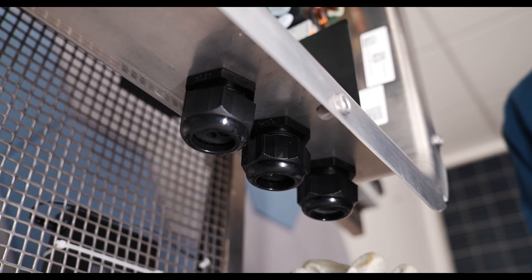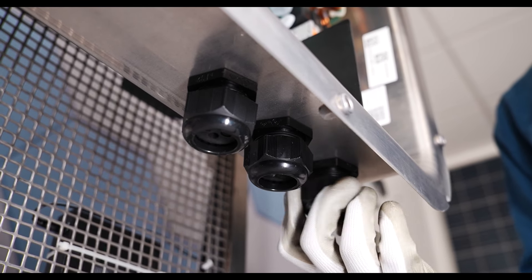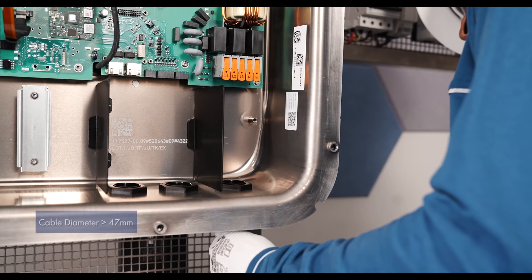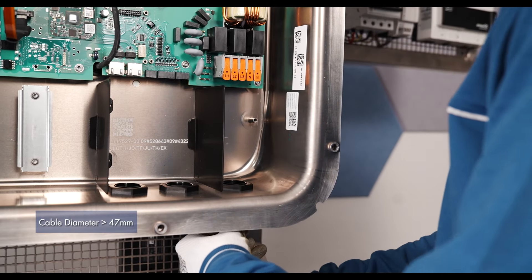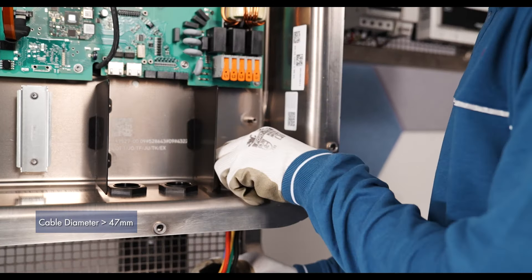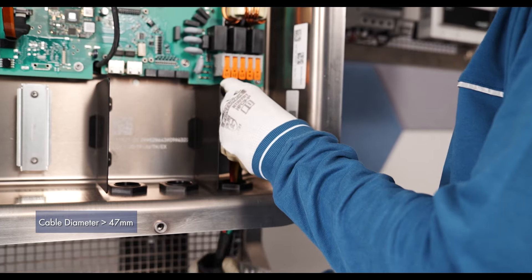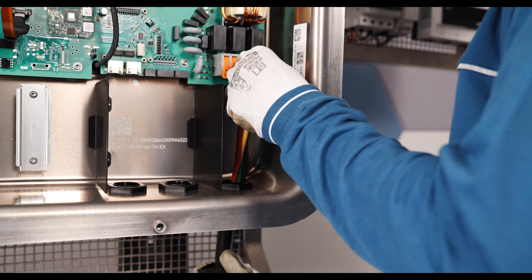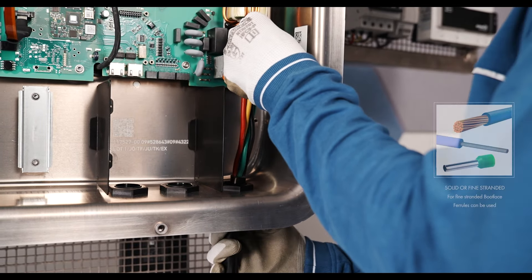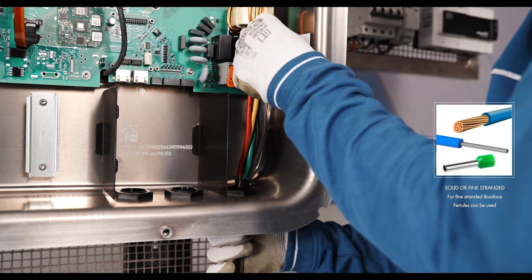Loosen the swivel nut of the cable gland at the bottom of the inverter. Remove the additional seal and insert the cable gland when using cable with a diameter of 47 mm or more. Then lead the cable through the swivel nut and cable gland into the device and ensure proper stripping conductors are used.